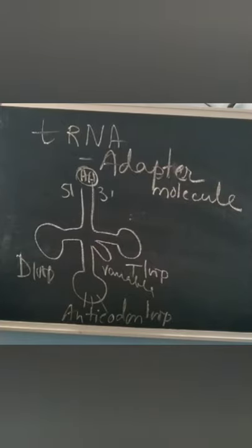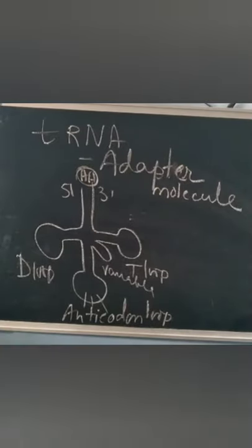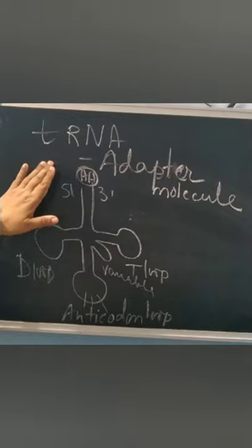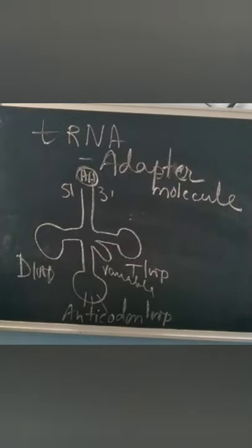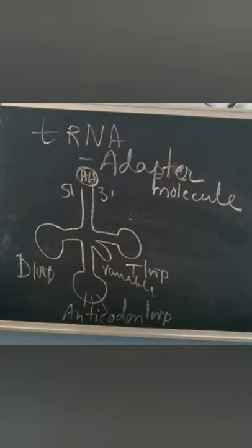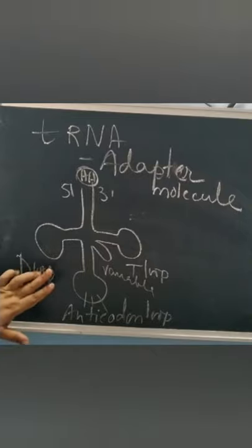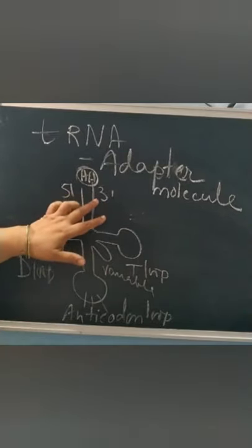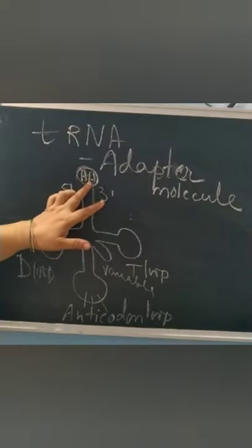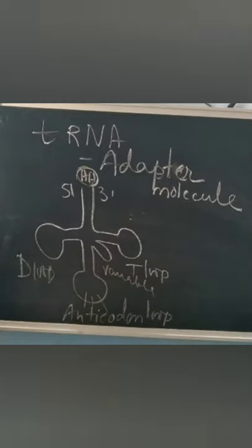Now, tRNA is a transfer RNA which is called the adapter molecule. The adapter molecule reads the code and binds to a specific amino acid. The tRNA was known before the genetic code and was called sRNA (soluble RNA), but later it was called the adapter molecule. tRNA has a special structure called the cloverleaf model, with a 5' and 3' end. At the 3' end there is amino acid attachment, and it has a D-loop, anticodon loop, variable arm, and T-loop.